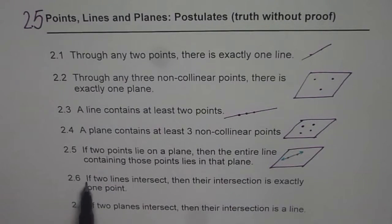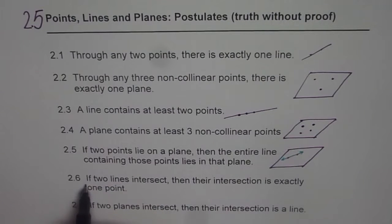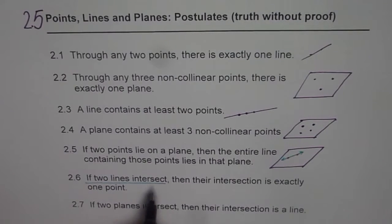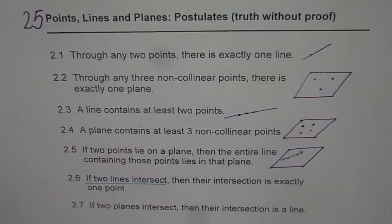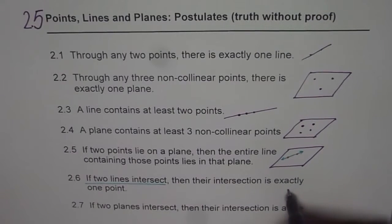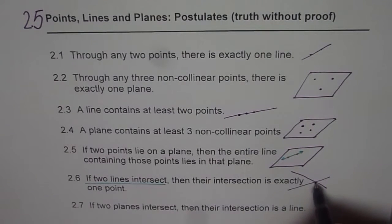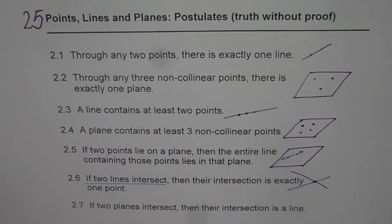Postulate 2.6: If two lines intersect, their intersection is exactly one point. So if I have two lines here and they intersect, their point of intersection is just one single point.